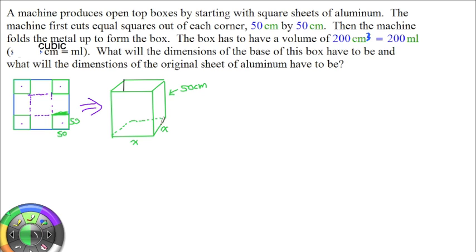We know the volume of this box. Volume equals length times width times height. We know the volume is 200 milliliters or 200 cubic centimeters. The length and width are both x, so this would be x times x.